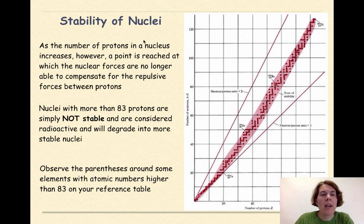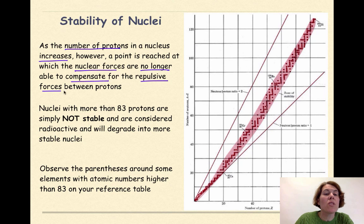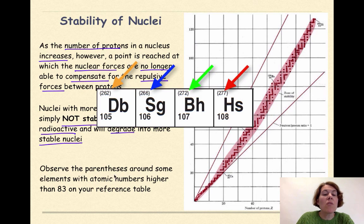Stability of nuclei. As the number of protons in a nucleus increases, a point is reached at which the nuclear forces are no longer able to compensate for the repulsive forces between the protons. Nuclei with more than 83 protons are simply not stable, and are considered radioactive, and will degrade or break down into more stable nuclei. Observe the parentheses around some elements with atomic numbers higher than 83 on your reference table. That's a pretty good indicator that those elements are unstable because they can only give a general estimate of what the atomic mass would be.